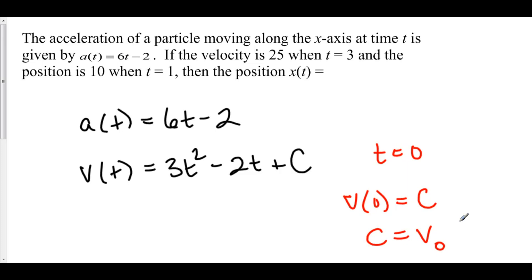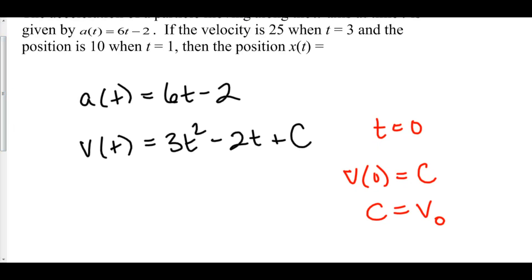So in reality, I can rewrite my velocity as v(t) is equal to my initial velocity plus the net change from zero to any time t of my acceleration function.